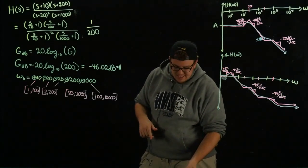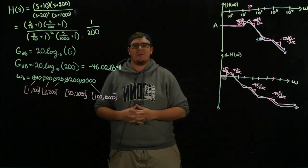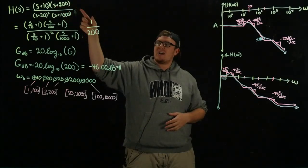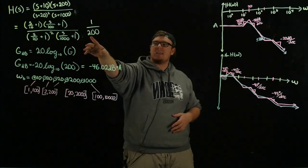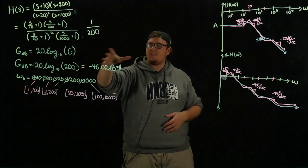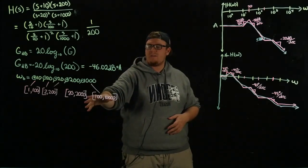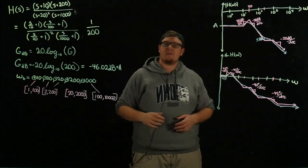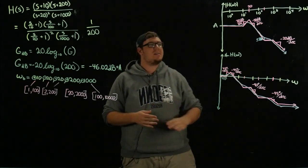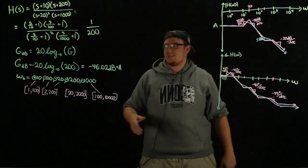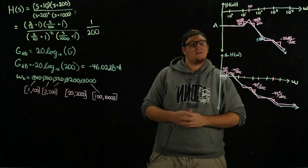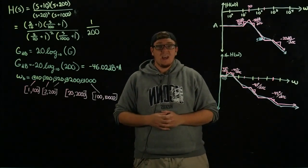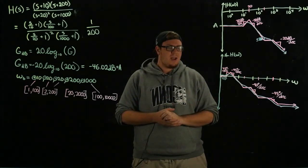That is how you approximately plot the Bode plots of a transfer function. To summarize: start with the transfer function, find the break frequencies and base gain, convert everything to decibels, find the phase influence regions (±1 decade), plot based on the influences at each break frequency, and then apply corrections as needed. Hope you guys learned something — have a good day.